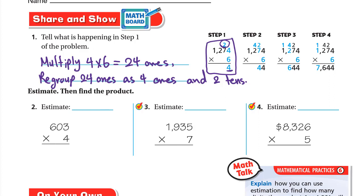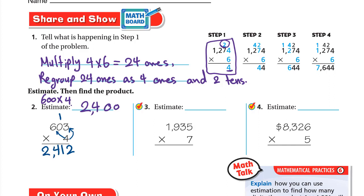Estimate then find the product of 603 times 4. To estimate, round 603 to the nearest hundred: the digit to the right of 6 is 0, which is weak, so we keep it 600. 4 times 600 is 2400. Now multiply exactly: 4 times 3 is 12, write 2 carry 1. 4 times 0 is 0 plus 1 is 1. Don't make the mistake of multiplying 4 by 1 — just bring the carried 1 down. Then 4 times 6 is 24, so the answer is 2412.